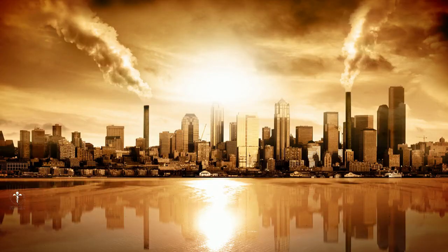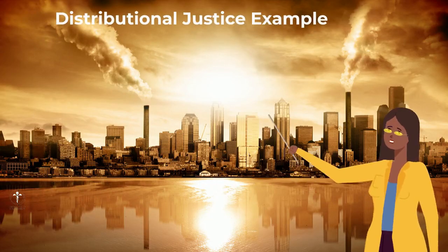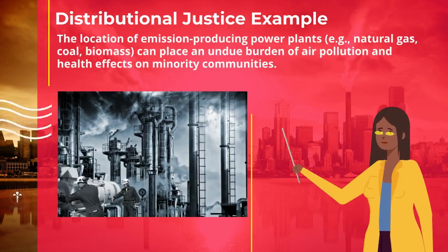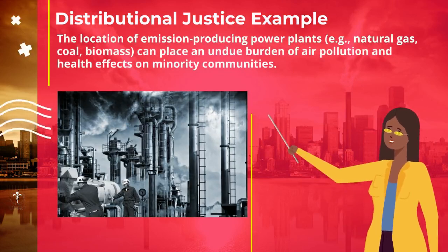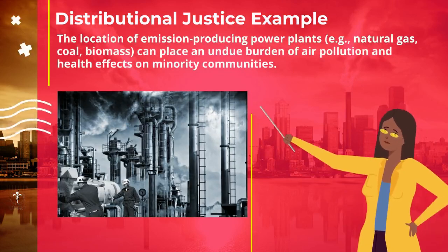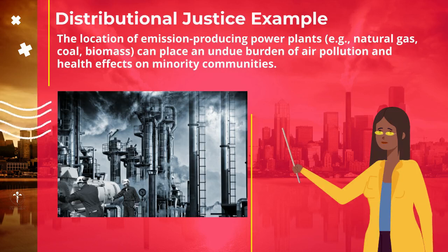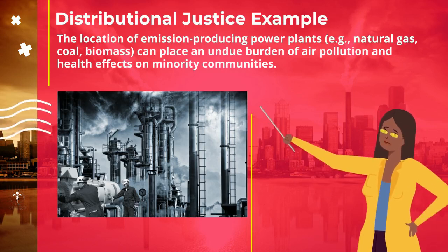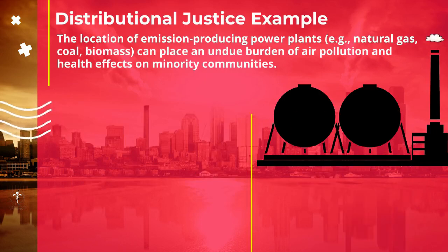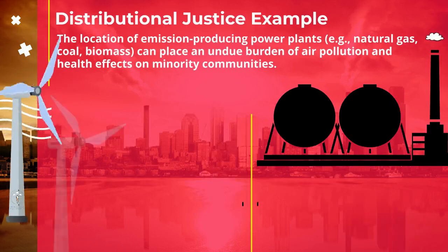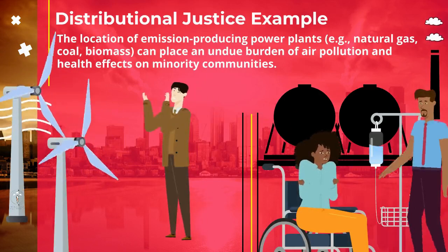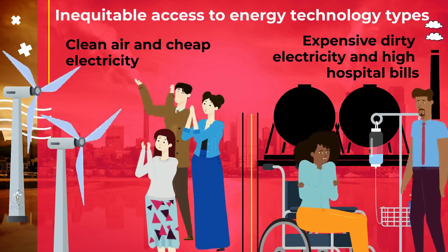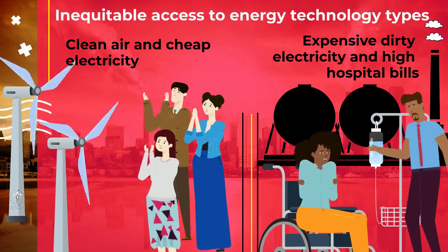Let's look at a distributional justice example. The location of emission-producing power plants, such as natural gas, coal, and biomass power plants, can place an undue burden of air pollution and health effects on minority and low-income communities. Sometimes this stems from inequitable access to different energy technology types.